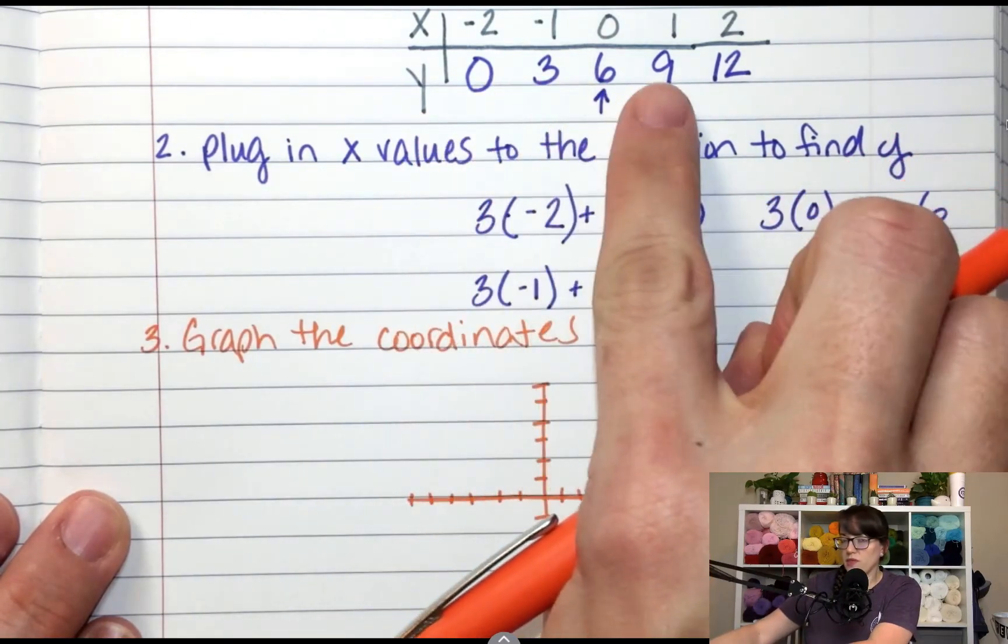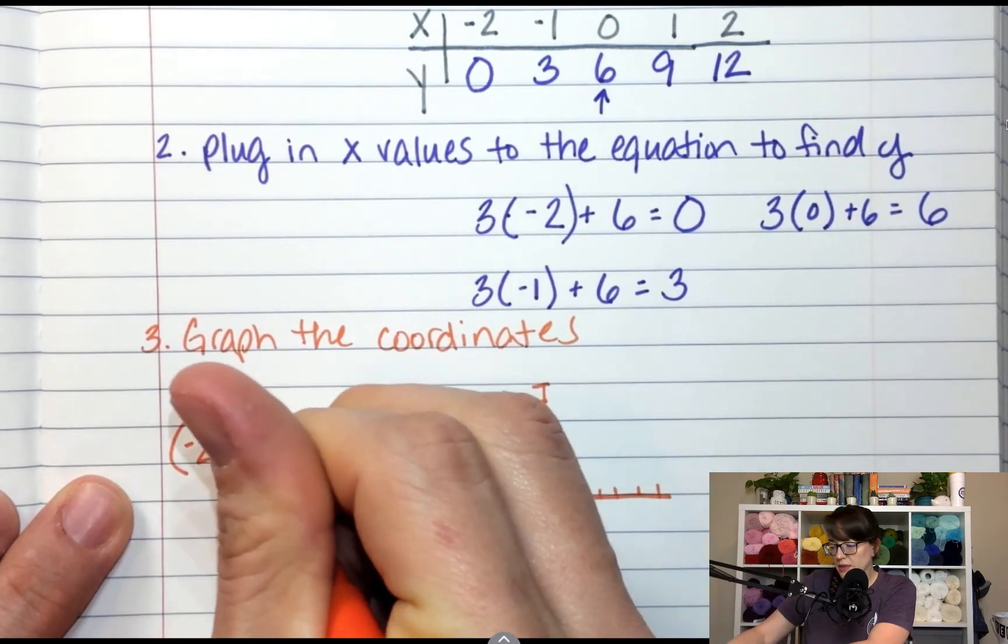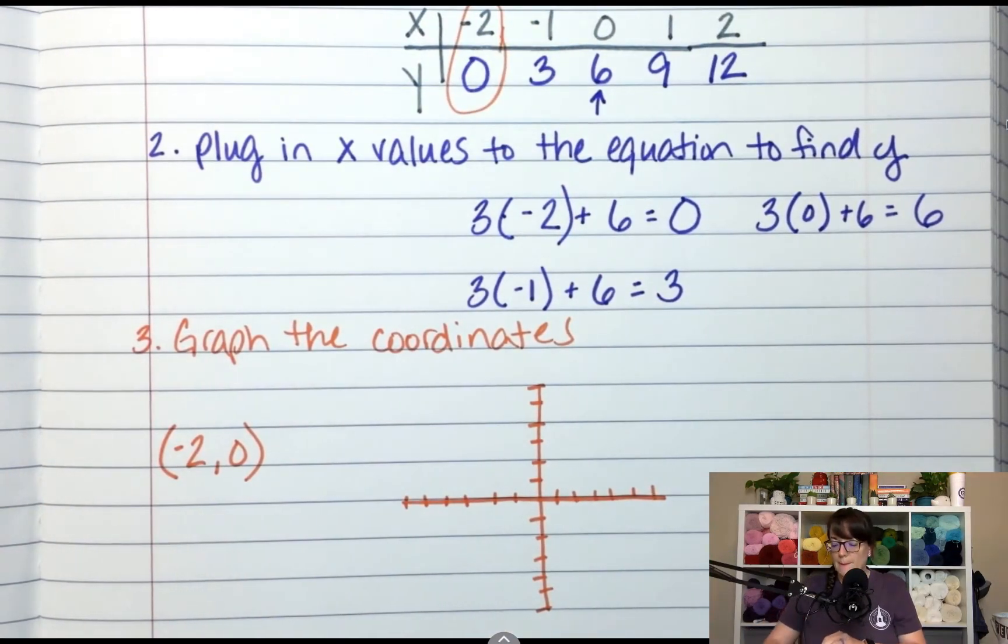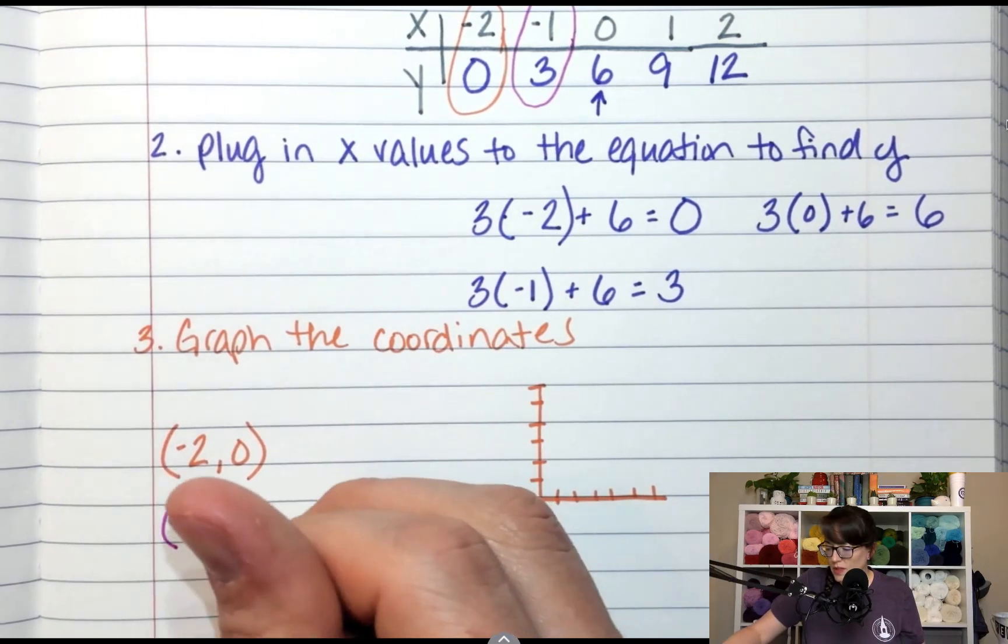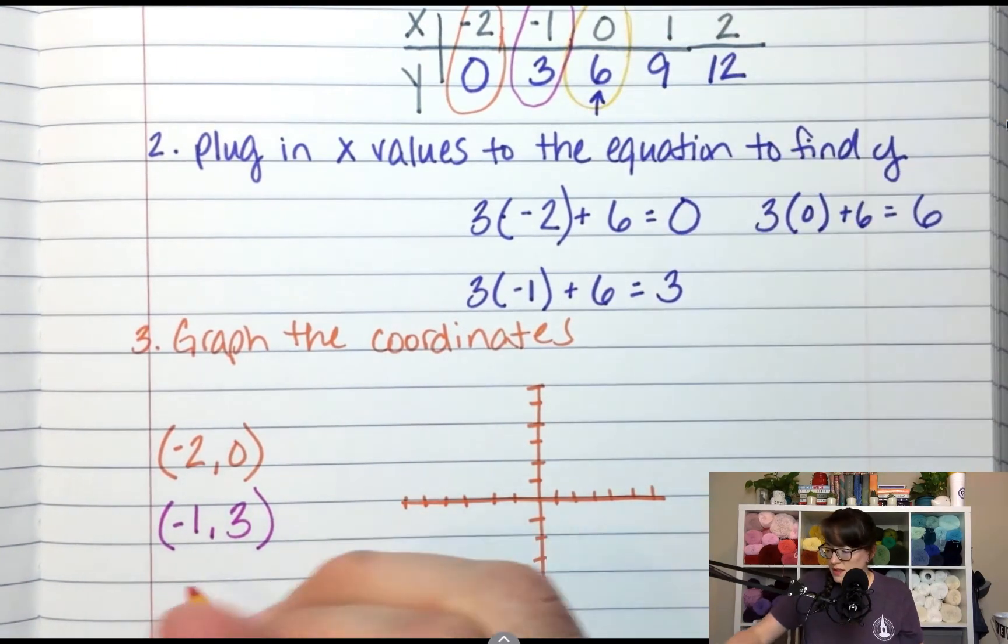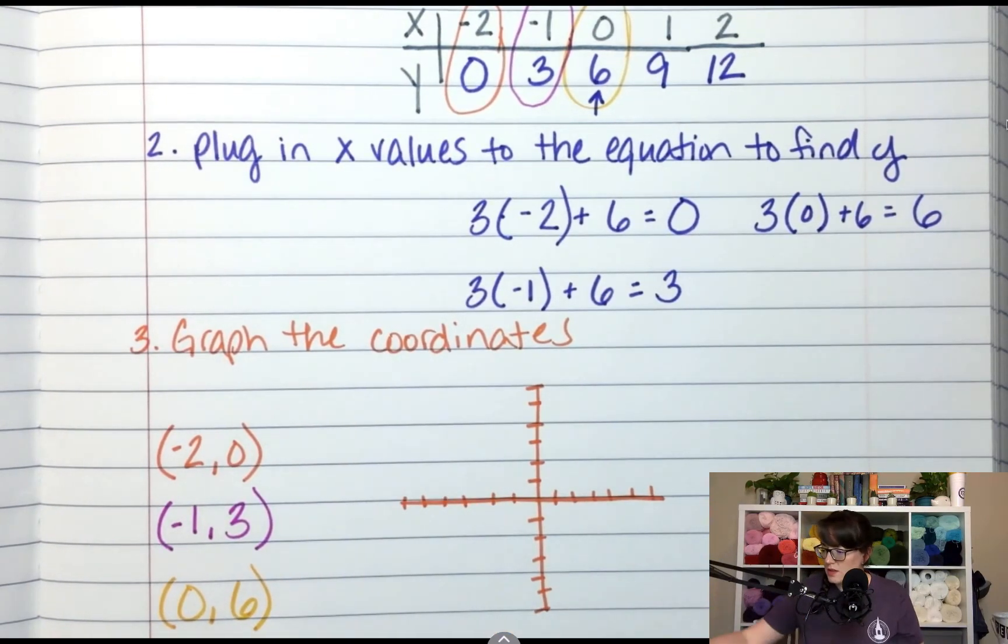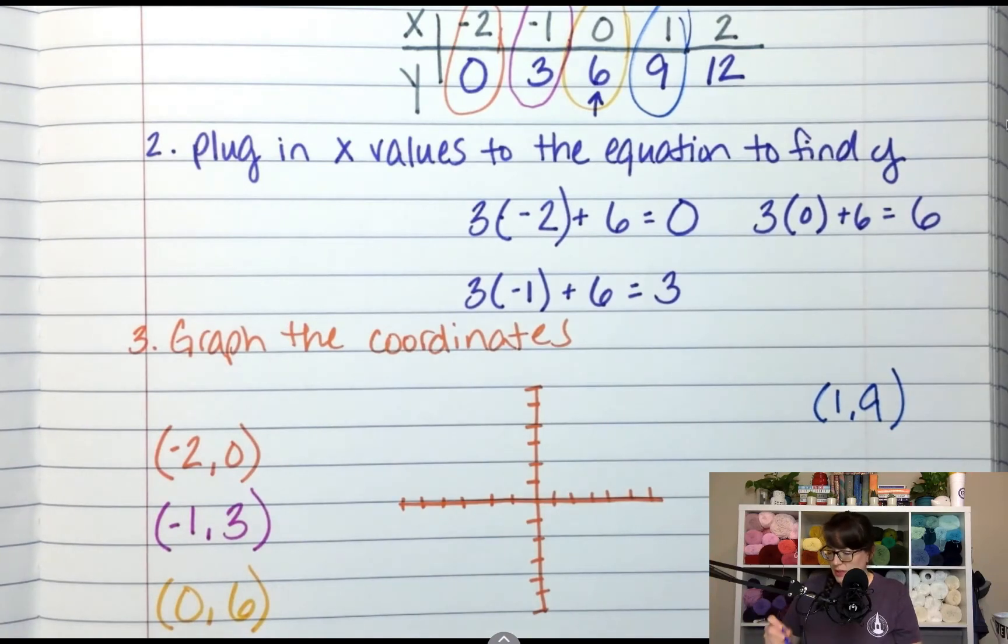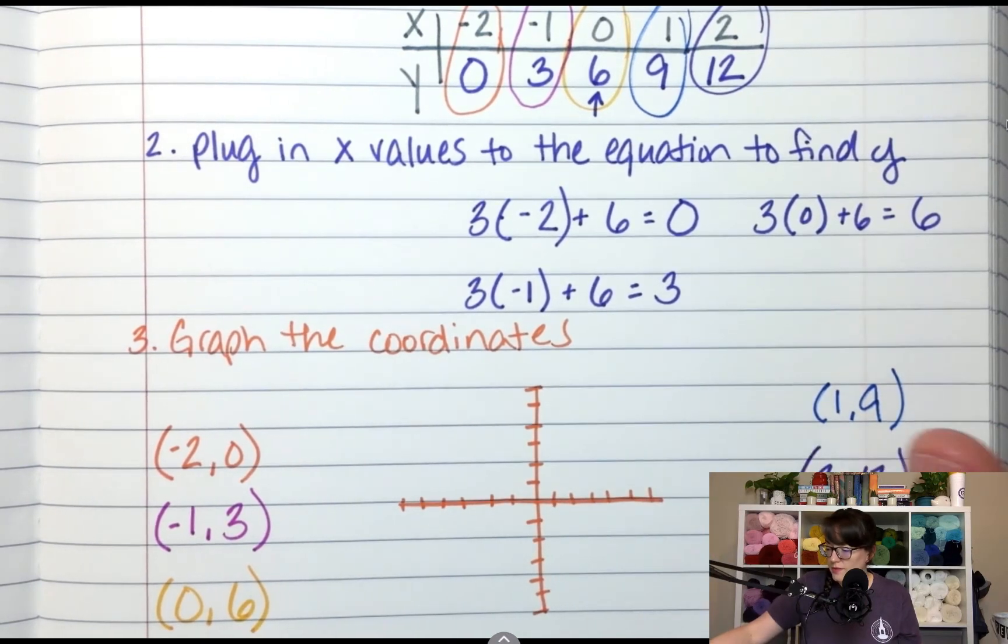Graphing equations. We have 1, 2, 3, 4, 5 ordered pairs. The first ordered pair is negative 2, 0. Right here. Negative 2, 0. My second ordered pair is negative 1, 3. Negative 1, 3. And the third one is 0, 6. This one right here is 0, 6. And then we have 1, 9. Oh, I'm running out of room. 1, 9. And lastly, we have 2 over 12. I'm sorry. 2 comma 12, not 2 over 12. Okay.